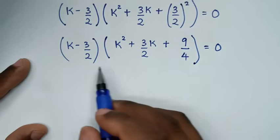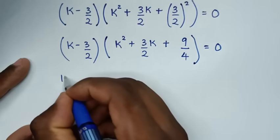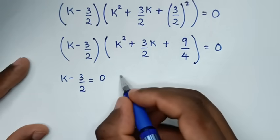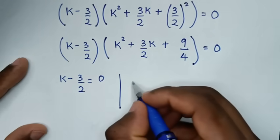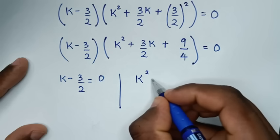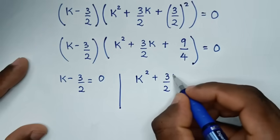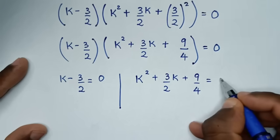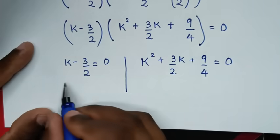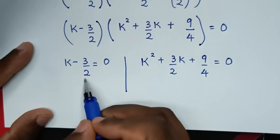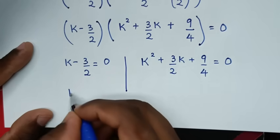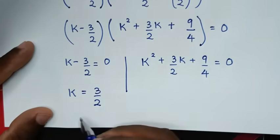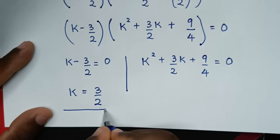From here we have two solutions. The first solution is k minus 3 over 2 equals 0, and the second solution is k squared plus 3 over 2 k plus 9 over 4 equals 0. From the first solution, taking negative 3 over 2 to the right side gives k equals positive 3 over 2. This is the first solution, which is a real solution.